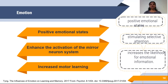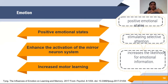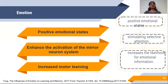Another factor is emotion. An article published in 2017 on the influence of emotion on learning and memory stated that positive emotional stress can enhance the activation of mirror neurons, and as we know mirror neurons are responsible for new learning, it will increase our learning. Also, positive emotional stress can stimulate selective attention towards learning a particular task, increasing the likelihood of information being stored. Here we have discussed the personal factors and psychological factors which can have an impact on motor learning.